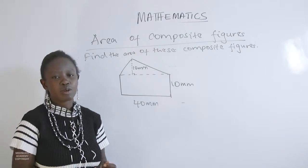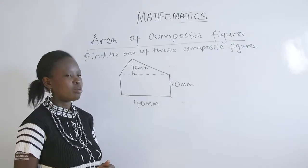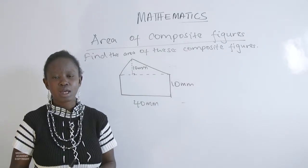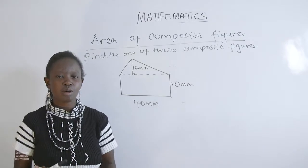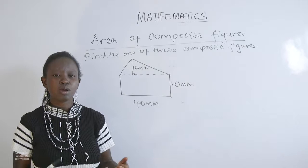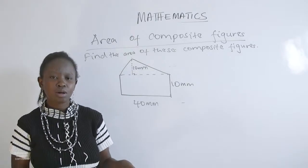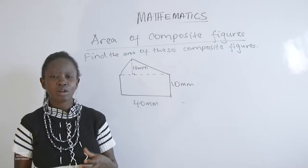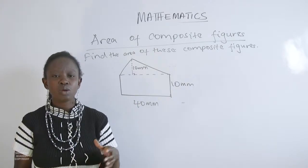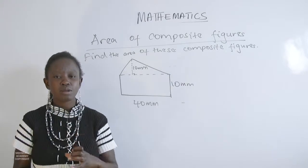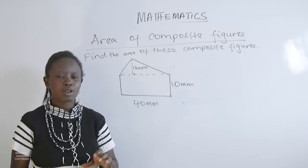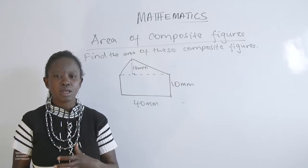We have looked at area of a rectangle, area of a triangle, and area of a parallelogram. Now we go a step higher and find the area of composite figures. A composite figure is a figure containing more than one of the basic figures we have talked about — a square and rectangle, square and triangle, rectangle and triangle, and so on. To find the area of a composite figure, get the area of each basic figure making it up, then add them together.